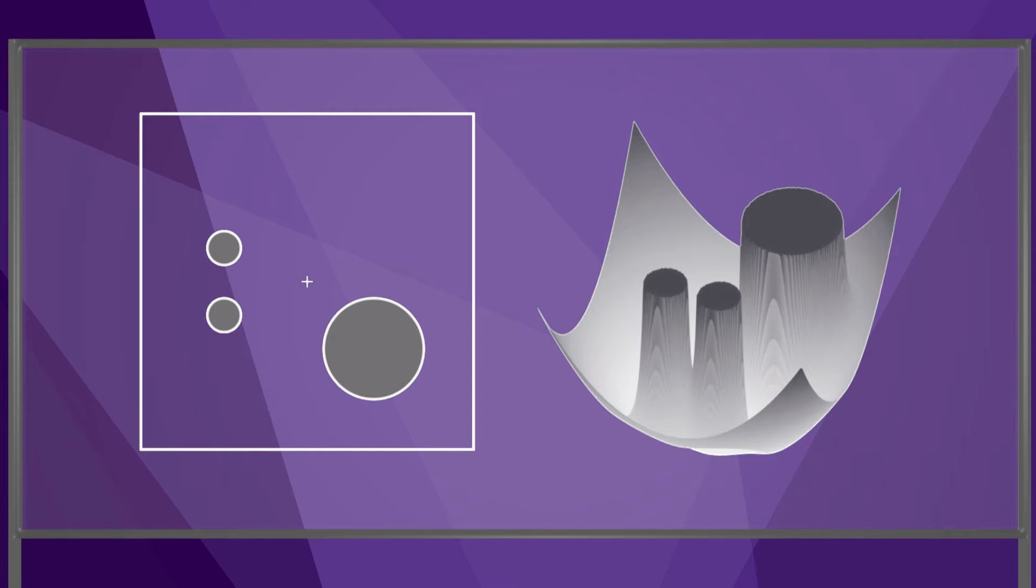This two-dimensional C-space has three obstacles, and the goal configuration is at the center. The sum of the attractive and repulsive potentials, capped at a maximum potential value, is shown in this figure.